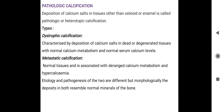Good morning everyone. In today's class we will discuss calcification. The name itself suggests it is an addition of calcium salts — deposition of calcium salts in tissues other than osteoid or enamel, which is called pathologic or heterotopic calcification. There are two types: dystrophic calcification and metastatic calcification.